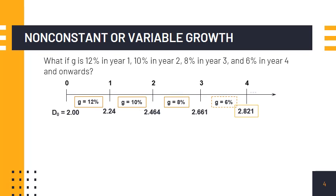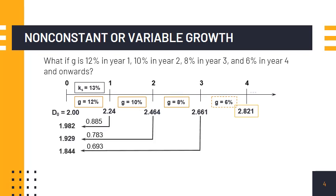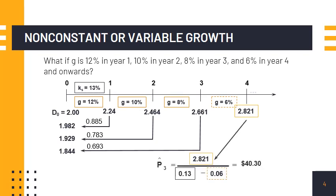We now compute present values using the required rate of return of 13 percent. The present values for the first three dividends are computed individually. Since the growth rate becomes constant starting in year four, we use the constant growth formula to compute the terminal value: P-hat-sub-3, with D-sub-4 as the numerator, giving a terminal value of $40.30. We then discount this amount at 13 percent for three years — note that discounting should be for three years, not four.